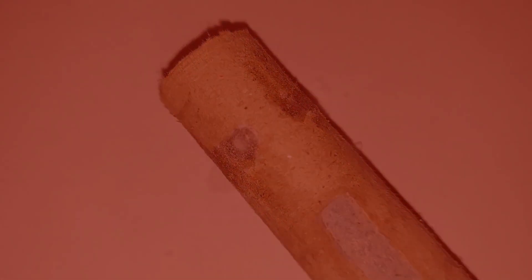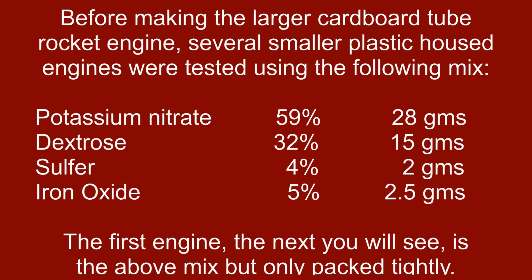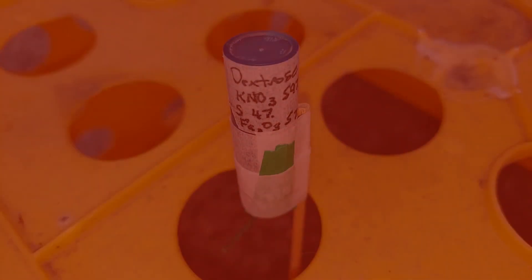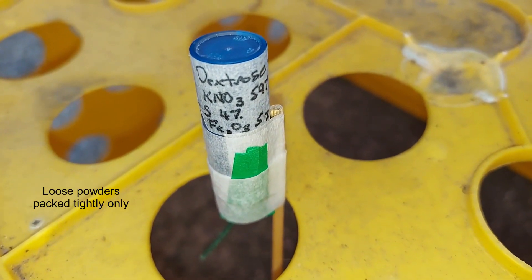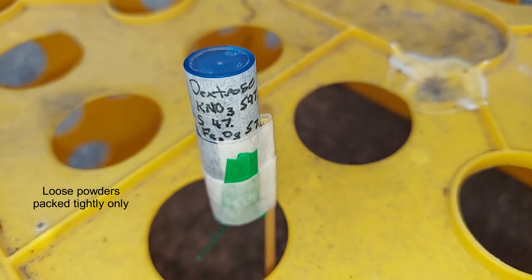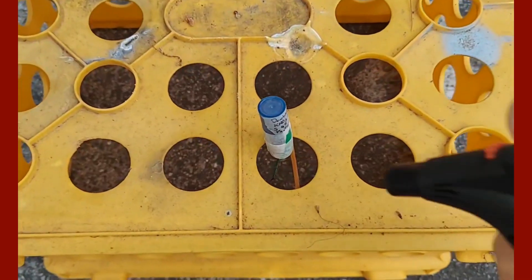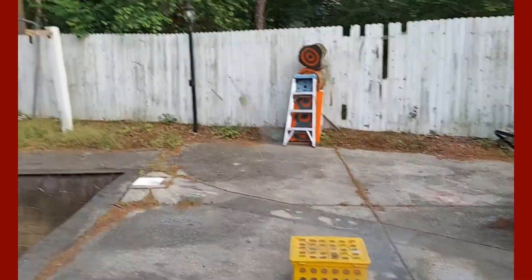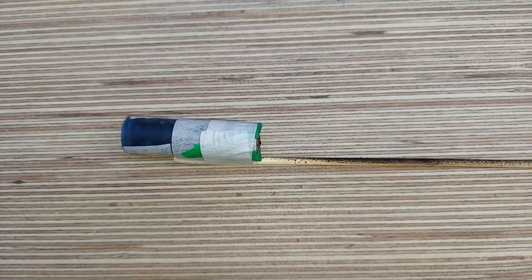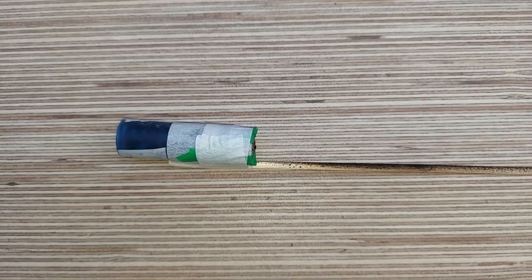This is a simple first test of the dextrose-based rocket engine: dextrose 32%, potassium nitrate 59%, sulfur 4%, and iron oxide 5%, just like I was talking about. A little hard to light here. This rocket engine was just packed powder, the next one I'll be melting.